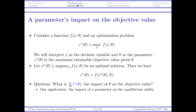The third mathematical tool concerns how a parameter may affect the objective value. Consider a function f(x, theta) and the optimization problem of maximizing f with respect to x. Interpret x as your decision variable and theta as a parameter you cannot control. Then z*(theta) is the maximum attainable objective value given theta, and x*(theta) is the maximizer of f.